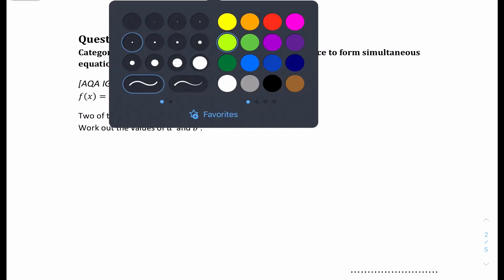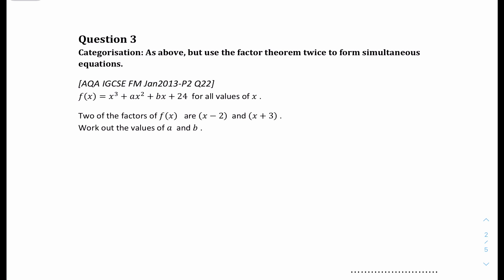Question 3: f of x equals x cubed plus ax squared plus bx plus 24, and two of the factors of f of x are x minus 2 and x plus 3. Find the values of a and b. When you have two unknowns — in this case a and b — and you're given two factors, it's probably a simultaneous equation. So let's do one factor first: x minus 2 equals 0, so x equals 2. Substitute 2 for x.